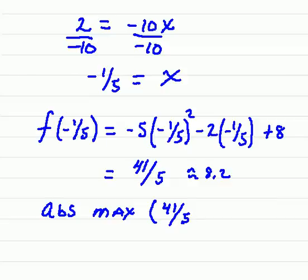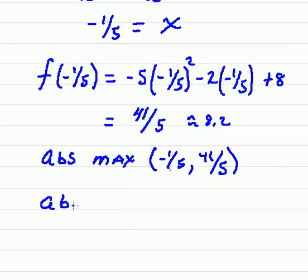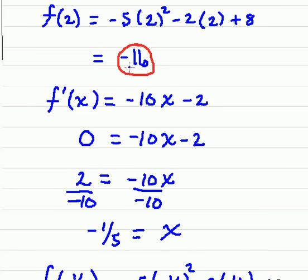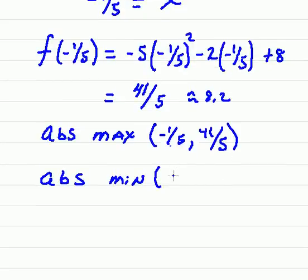Well, no, that's not exactly right. Negative 1 fifths, 41 fifths, so that would be the point on the graph. And then the absolute minimum, we're looking here, it was negative 16, so 2 negative 16.